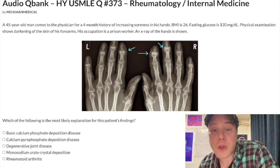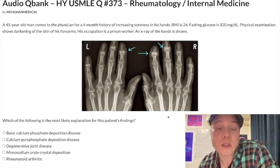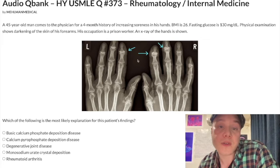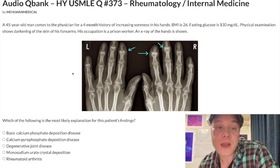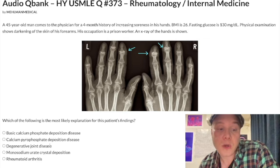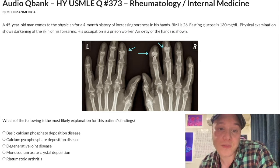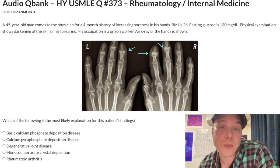Does he use his hands? When you get a hand X-ray on USMLE and you have no idea what you're looking at, take two steps back and just ask: is there DIP involvement — distal interphalangeal joint involvement? That's the first thing you should do with any hand X-ray. Just ask, is there DIP involvement? If yes — which in this case there is — rheumatoid arthritis is the wrong answer. You instantly eliminate RA because there's DIP involvement. RA does not affect DIPs, at least on USMLE. It'll be PIP and MCP.